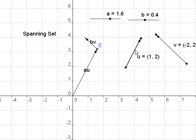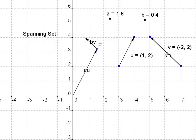I have two vectors here: u, which is the Cartesian vector (1, 2), and v, which is the Cartesian vector (-2, 2). This forms a spanning set because any linear combination of those two vectors can produce any third vector